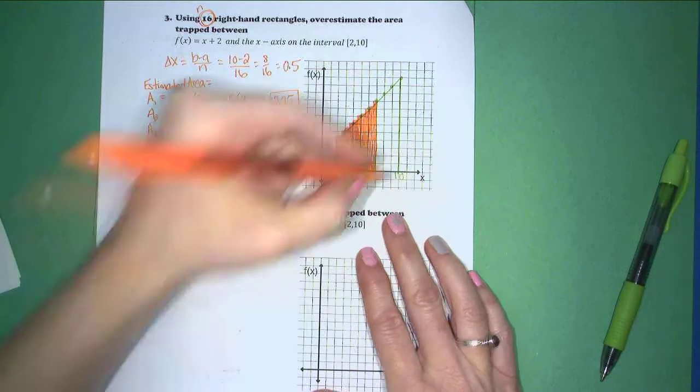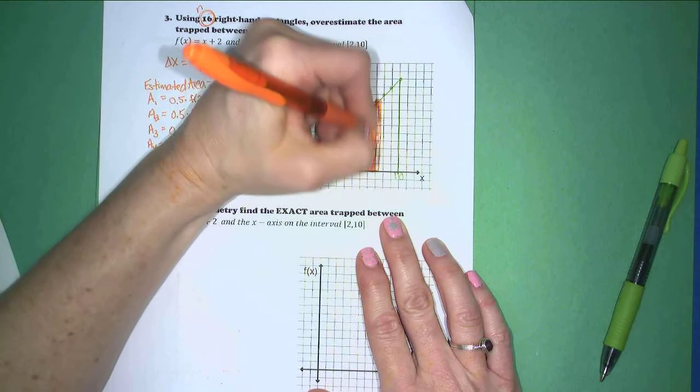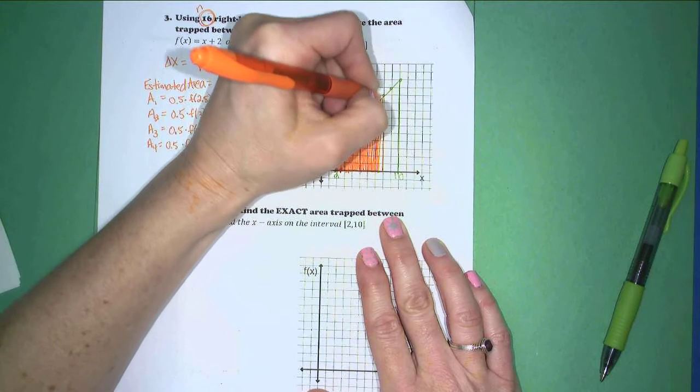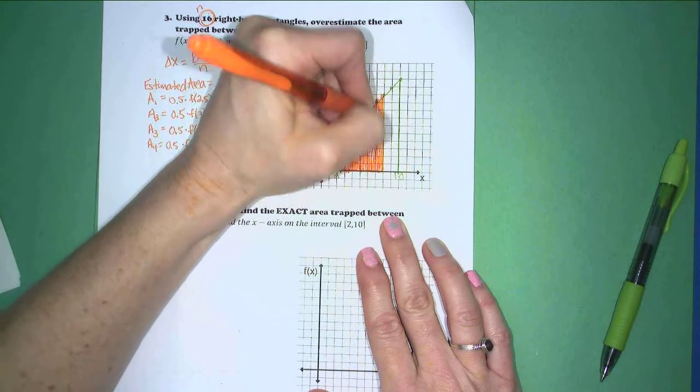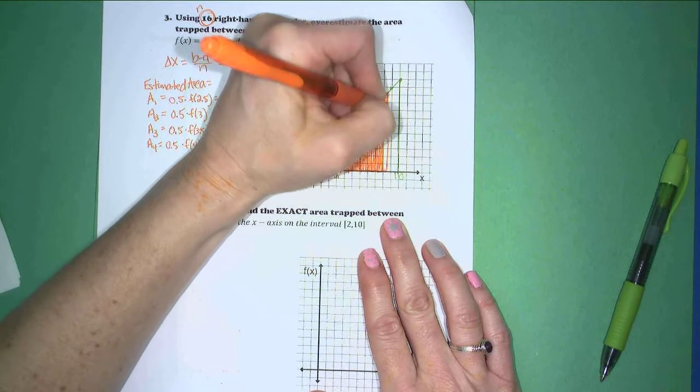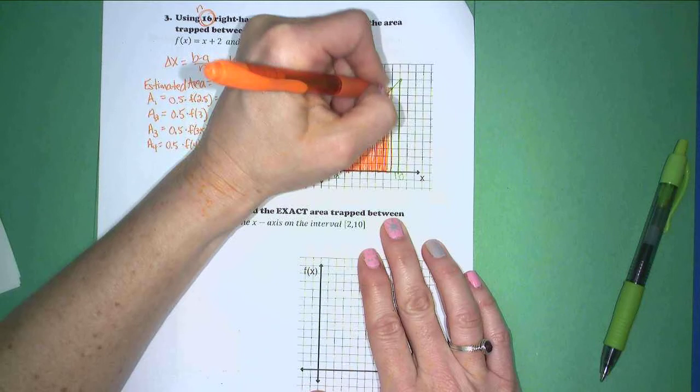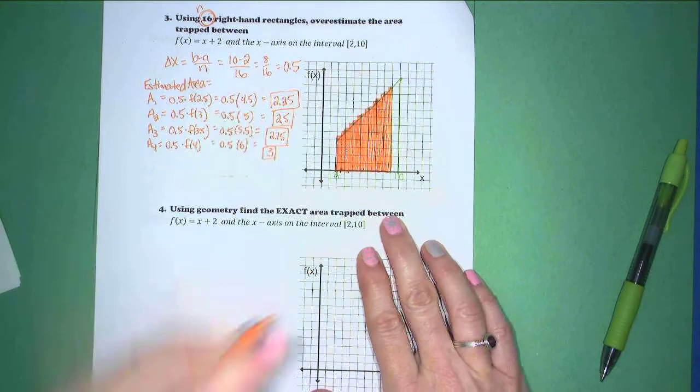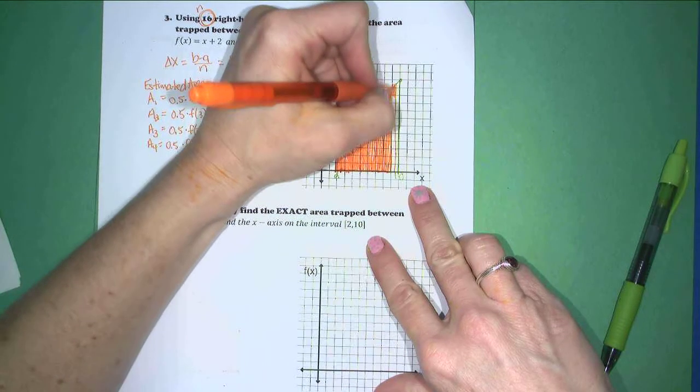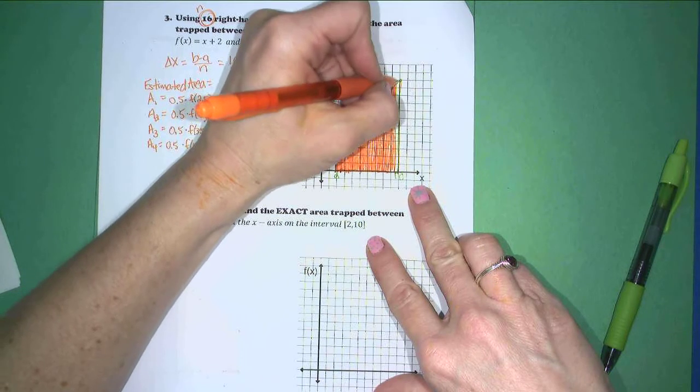Filling up this area step by step. Coming up. Half. Almost there. Four more to go. Two to go. And last but not least, f of 10.